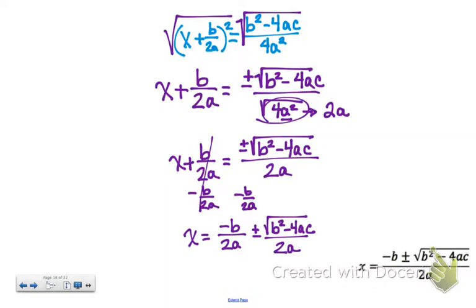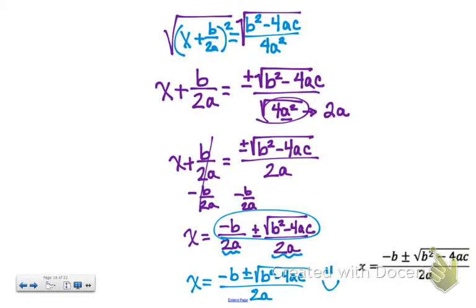And so at this point we do have like denominators. We've got 2a's in each of our denominators, so we can just combine the numerators, and we get x = (-b ± √(b² - 4ac))/2a. And that, ladies and gentlemen, is our quadratic formula derived from completing the square.